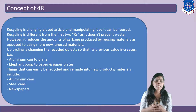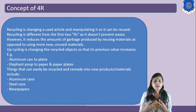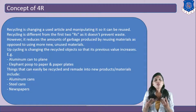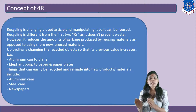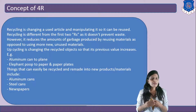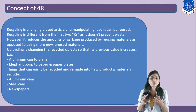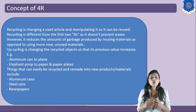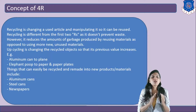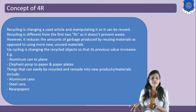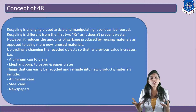Recycling is changing a used article and manipulating it so it can be reused. Recycling is different from the first two R's as it does not prevent waste, but it reduces the amount of garbage produced by reusing materials instead of using new unused material. Upcycling is changing the recycled object so that its previous value increases — for example, converting aluminum into a plate, or elephant poop into paper and paper plates, thereby increasing the value.